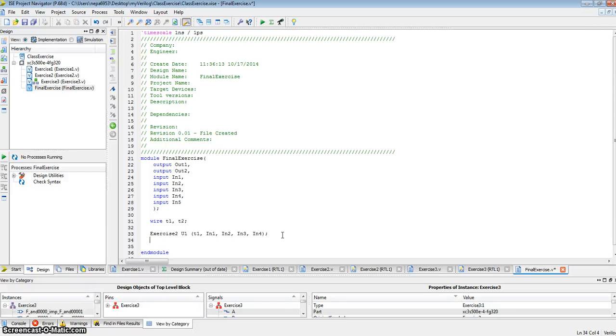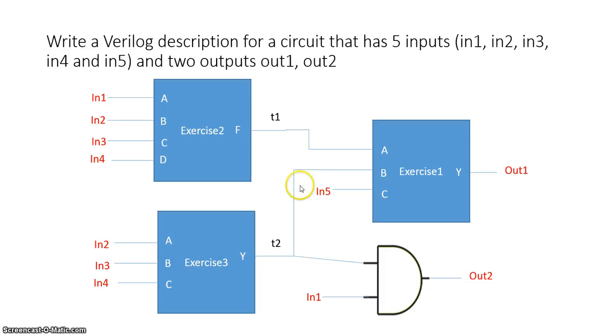We've described exercise two. Now similarly, let's instantiate exercise three. We'll call that module u2. The output of that module is connected to t2, and the inputs, so output of that module is connected to t2. Input a is connected to in2, b is connected to in3, and c is connected to in4. So let me go back here.